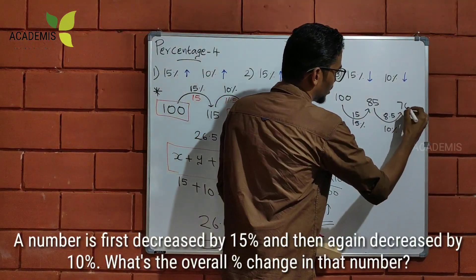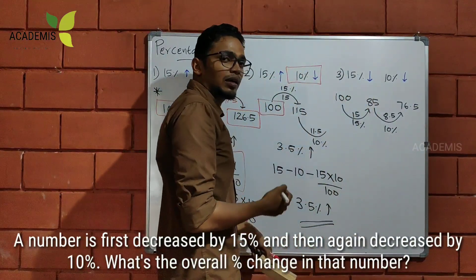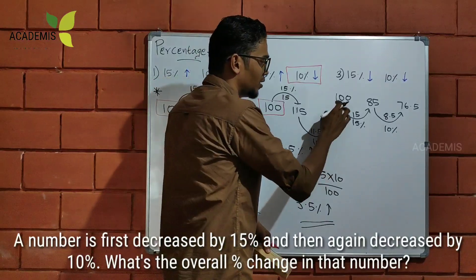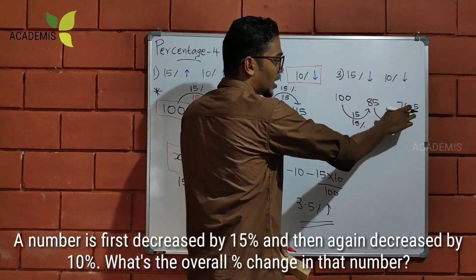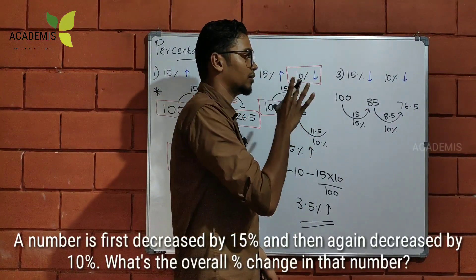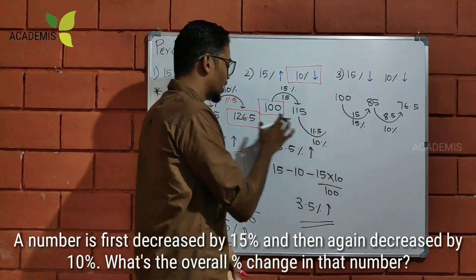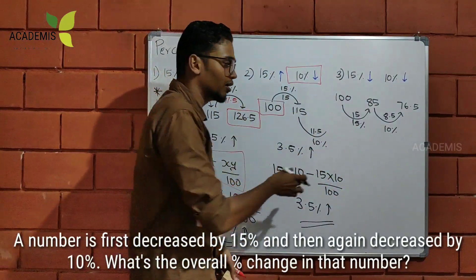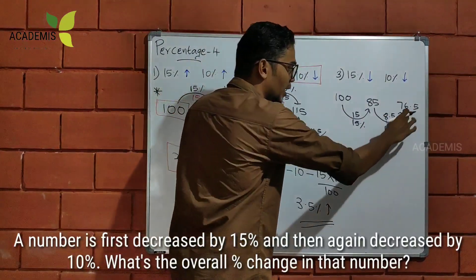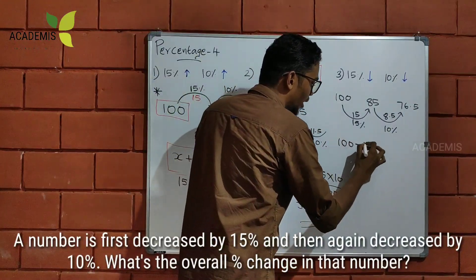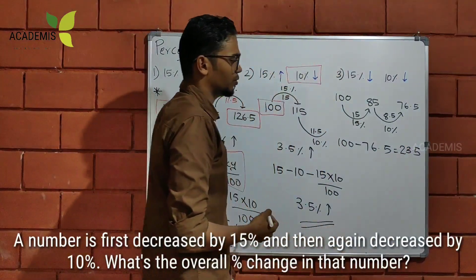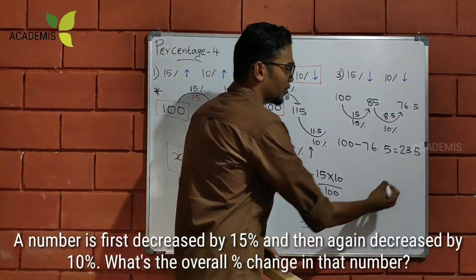How did we get? 76.5. How did we get 76.5? So, how did we get that logic? 76.5 is 100 minus 77.5, which is equal to 23.5. So 23.5% is the decrease. How did we get? The 100.5 value — that's the answer.